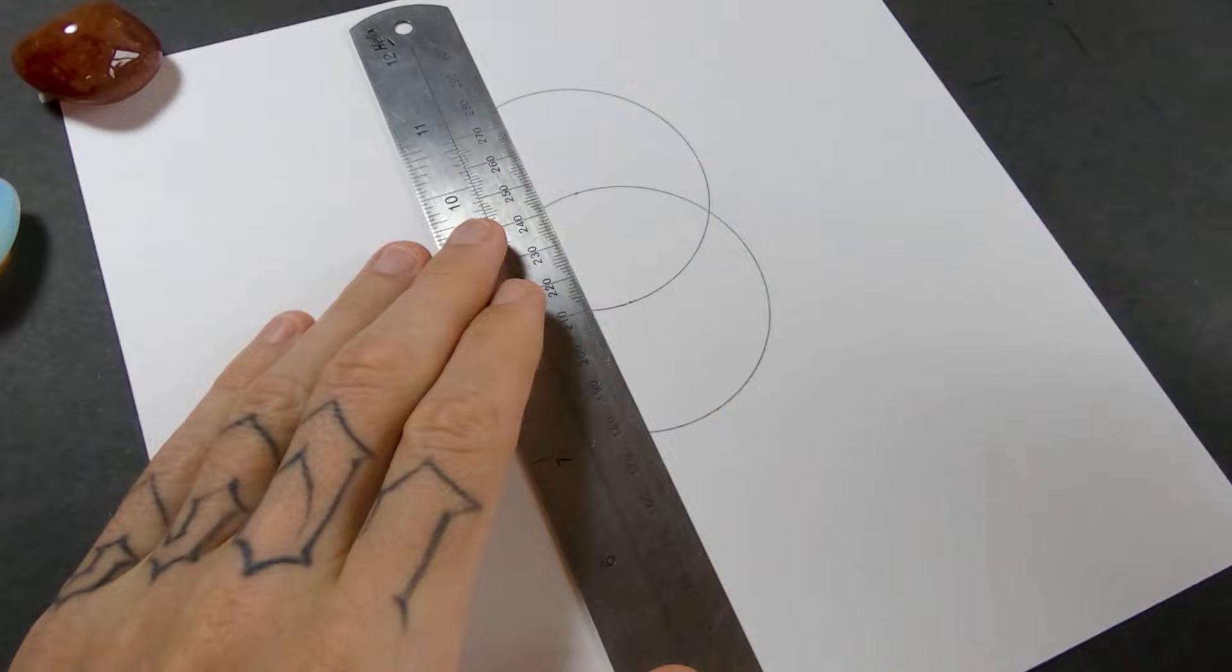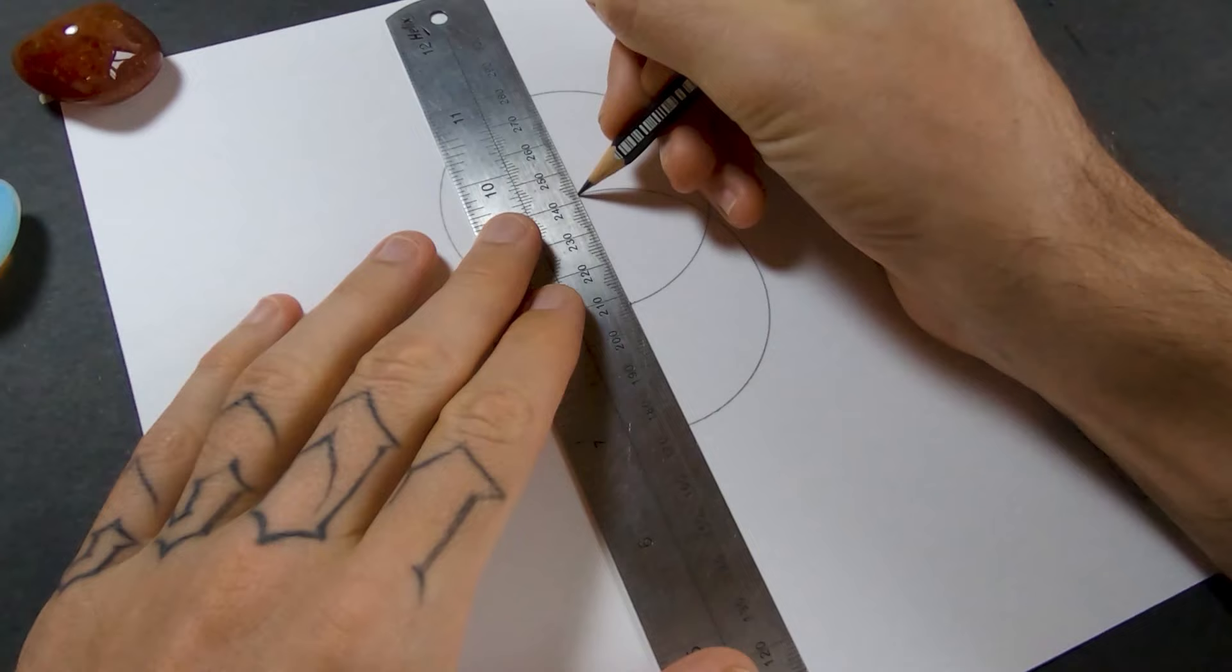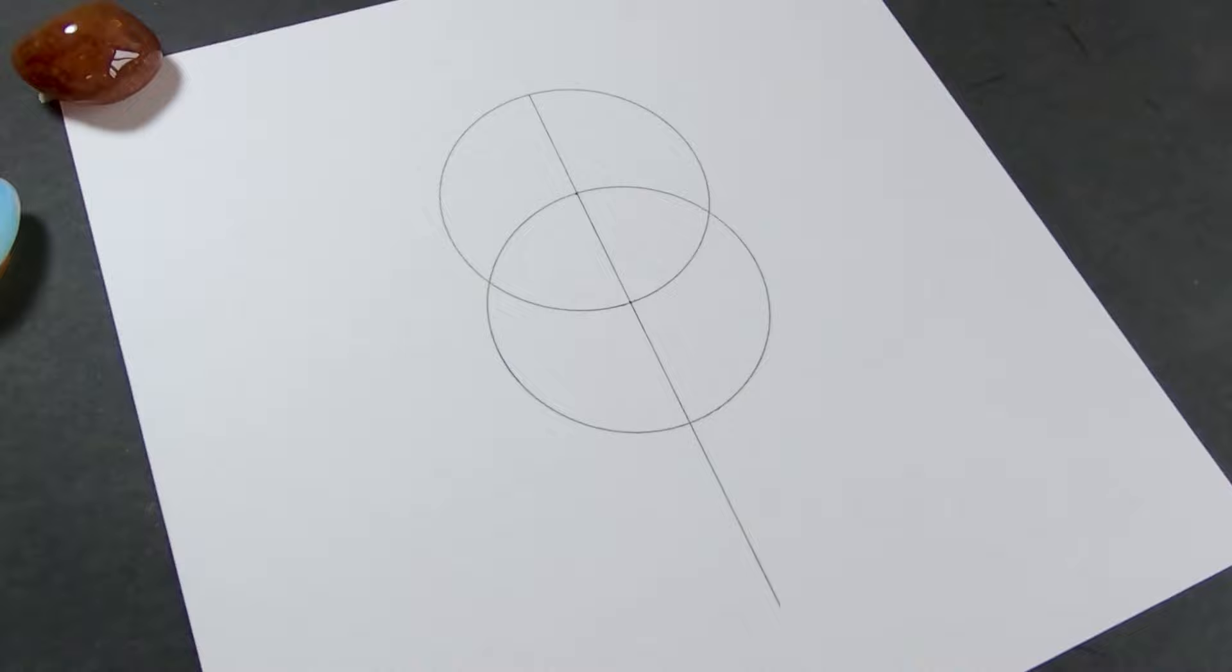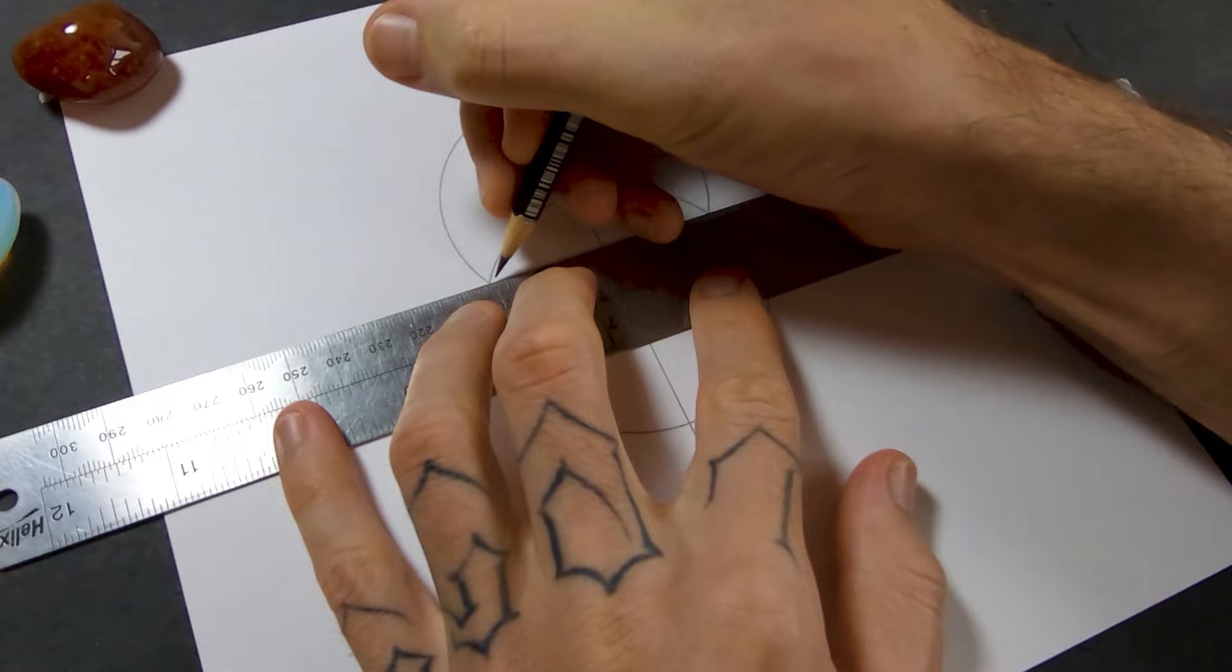Then I'm going to use the center points of both those circles to draw a line straight down the middle. Now I'm going to use these two points where the circles cross, connect them together, and that will give me the center point of this section.